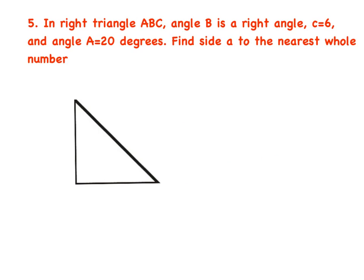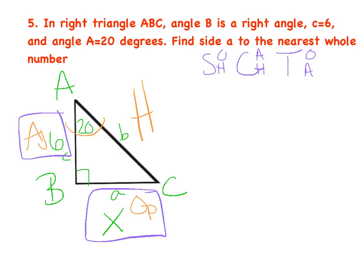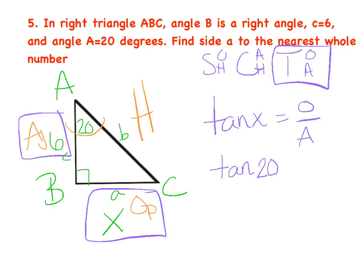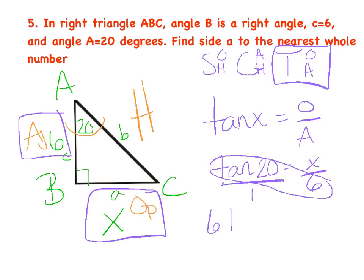We're coming up on the last two problems. One is finding a side and one is finding an angle — pause and see if you can do them on your own. For the side problem: I've labeled that I know the adjacent and I'm looking for the opposite, so O and A gives tangent. Tangent of 20° = X/6. Cross-multiply — remember to write the single digit out front: 6 · tan(20°) = X. X is by itself, so go to the calculator: 6 × tan(20°) = 2.18, which to the nearest whole number is 2.